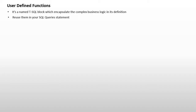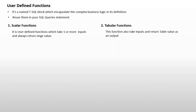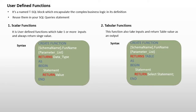We have basically two types of user-defined functions. One is a scalar function and the second is a tabular function. Scalar functions can take one or more inputs but always return a single value. Similarly, tabular functions can also take one or more inputs but they return a table as the value.